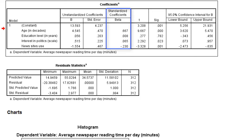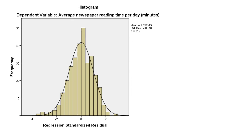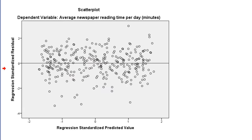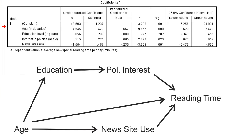Do we meet the requirements for regression analysis? Let's have a look at the residuals. The residuals are normally distributed, so that's okay. The residuals are nicely distributed above and below zero at different levels of the predicted value, and the variation in the residuals is more or less equal for low, medium, or high levels of the predicted value. So we have reasons to believe that we fulfill the assumptions for regression analysis. Now we can enter the standardized coefficients to a path model, and here they are.